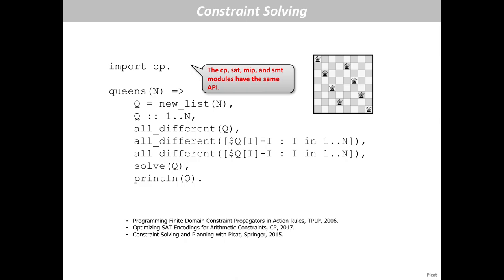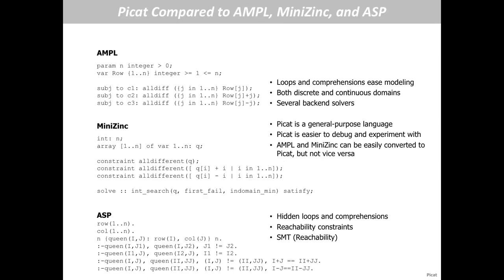Comparing with MiniZinc and ASP: as a modern language, PyCAD is similar to MiniZinc in supporting loops and list comprehensions, and it also supports multiple back-end solvers. But PyCAD is a general-purpose language, so you can convert MiniZinc models to PyCAD easily but not vice versa. As a general-purpose language, you can experiment with different models easily. ASP can also be considered a modeling language for CSP, but it features Horn rules and list comprehensions.